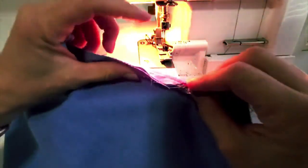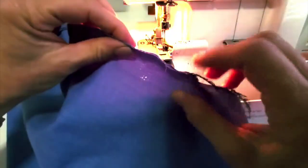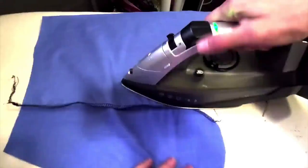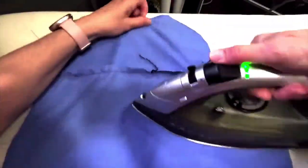But for the front I'm just going to start a couple inches above that bottom of the pocket. At the iron now, we're going to press the seam allowance toward the pocket for both the front and the back.